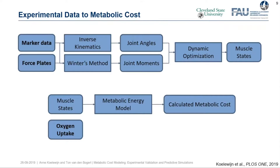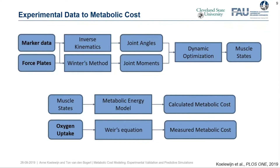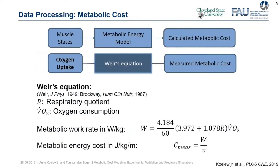Based on the muscle states, we used the metabolic energy models — or in the case of Kim and Roberts' model, we used the joint velocities and joint moments — to find the calculated metabolic cost. We used Weir's equation to find the measured metabolic cost. Weir's equation uses as input the respiratory quotient — the ratio of oxygen inhaled and carbon dioxide exhaled — and the oxygen consumption, giving metabolic work rate in watts per kilogram of body weight, then divided by speed to get metabolic energy cost in joules per kilogram per meter.